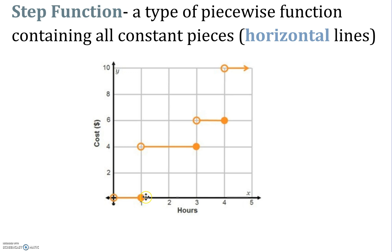We have a horizontal line here, and then the next step here, then the next step here, and then the next step here. This step function is an example of a discontinuous graph — that just means you can't draw this graph without removing your pen or pencil from the graph.